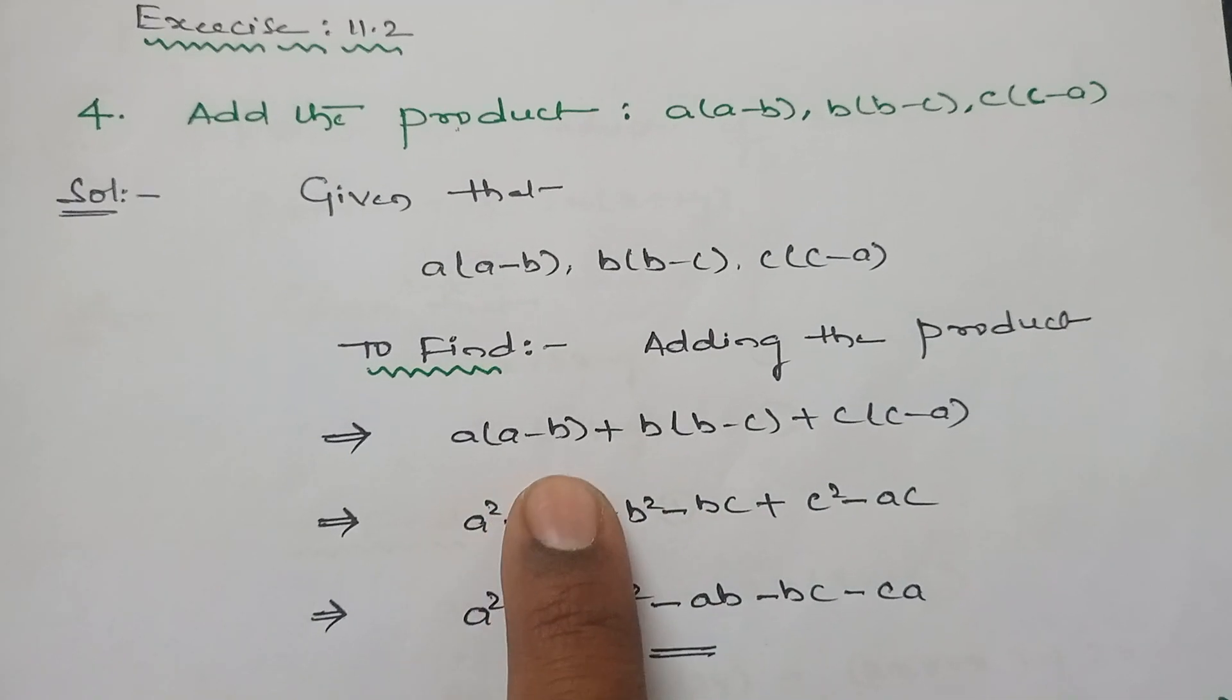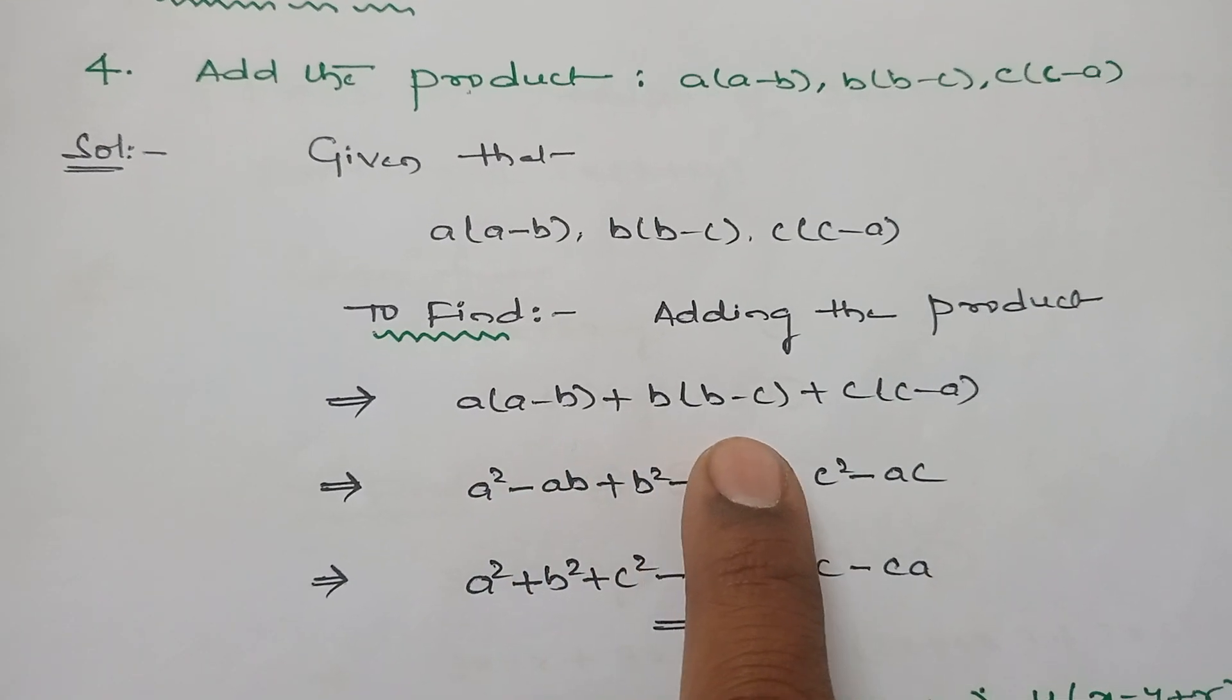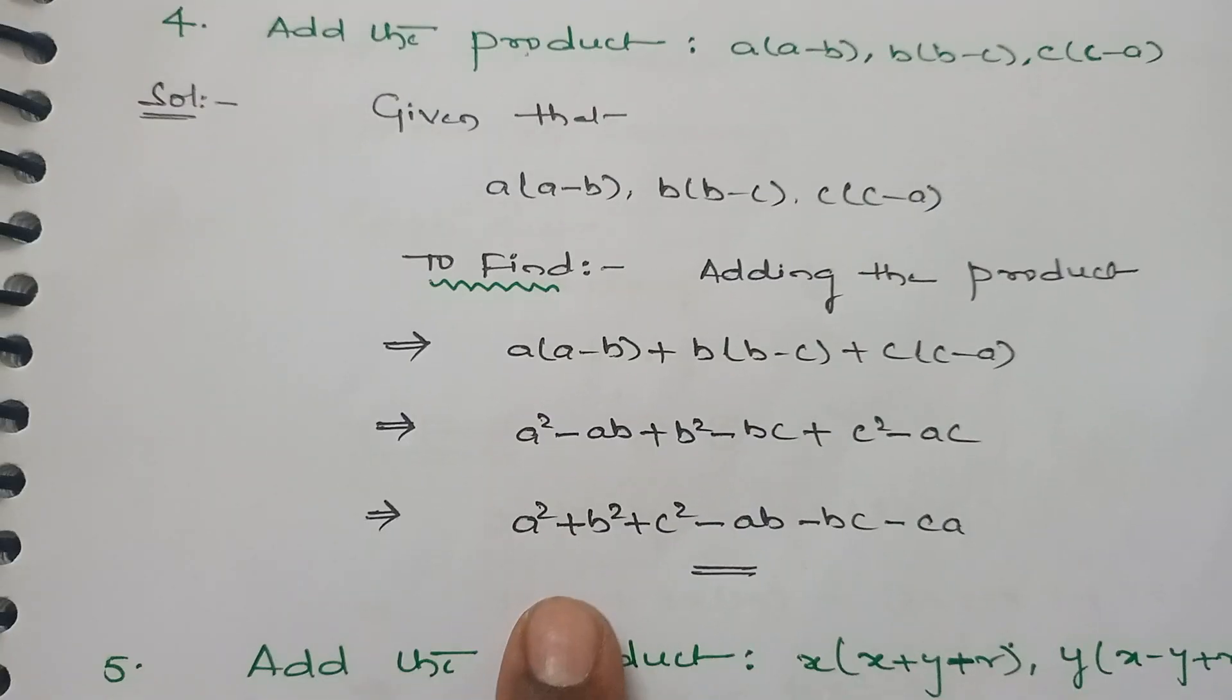a repeated two times is a squared minus ab. b into b is b squared, b into c is bc. c repeated two times is c squared, minus ca or ac. So square terms on one side.